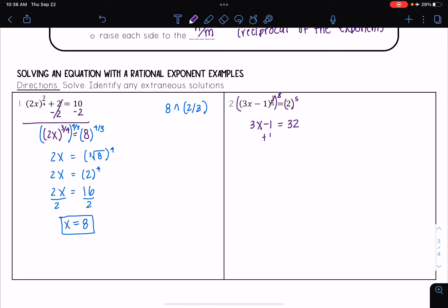And then I can just solve the resulting equation. So I'm going to add 1 to both sides. And I get 3x is equal to 33. And then divide both sides by 3. And I get that x is equal to 11.